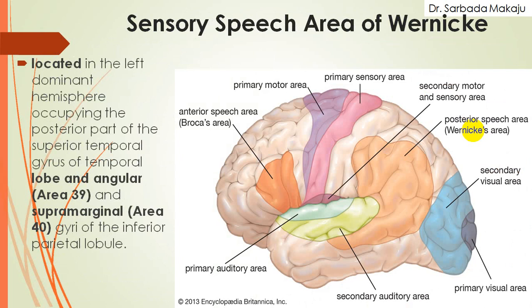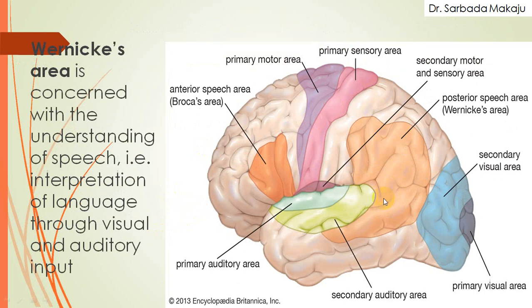The sensory speech area of Wernicke is located in the left dominant hemisphere, occupying the posterior part of the superior temporal gyrus of the temporal lobe, the angular gyrus which is area number 39, and the supramarginal gyrus which is area number 40, of the inferior parietal lobe. This Wernicke's speech area is concerned with the understanding of speech — that is, interpretation of language from visual and auditory input.